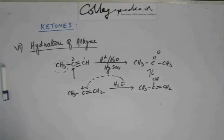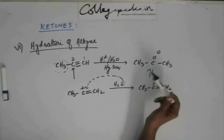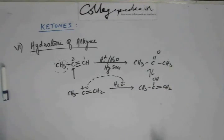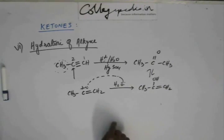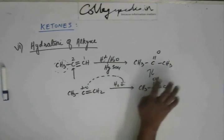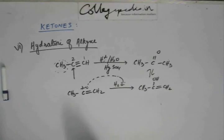This enol form quickly tautomerizes to give the keto form, which is reported as the final product because it constitutes 99% of the equilibrium. The keto form is very stable due to the C=O bond. So this reaction is a method of preparation of ketone, with C=O on the inner carbon.